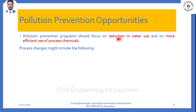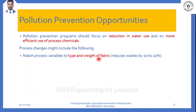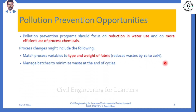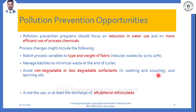For pollution prevention, textile industries should focus on reduction of water use - they consume over 2,700 liters of water for making one t-shirt. The first step is reducing water use for efficient processing of chemicals. Second is the type and weight of fabric - using less weight fabrics can reduce waste by 10 to 20 percent. Third, they should avoid non-degradable or less degradable surfactants, which are chemicals used for washing and scouring purposes.